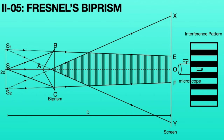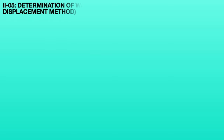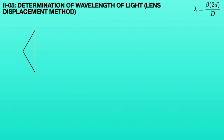In order to measure the distance between the two virtual sources 2D, we will use the lens displacement method. From this, we can calculate the wavelength of the monochromatic source. Consider biprism ABC and light source S which is very near to the biprism. From the biprism and light source S, virtual light sources S1 and S2 are formed.